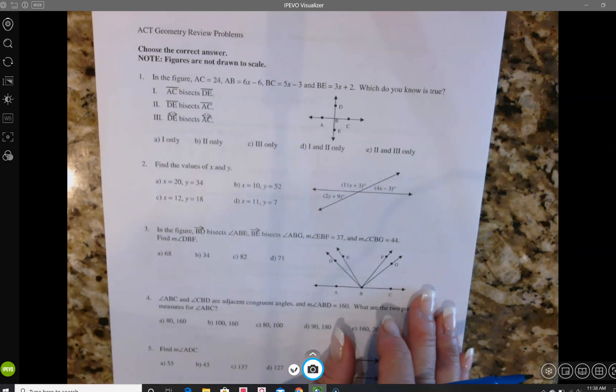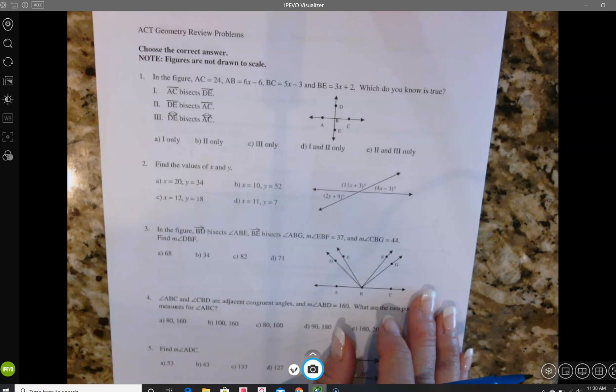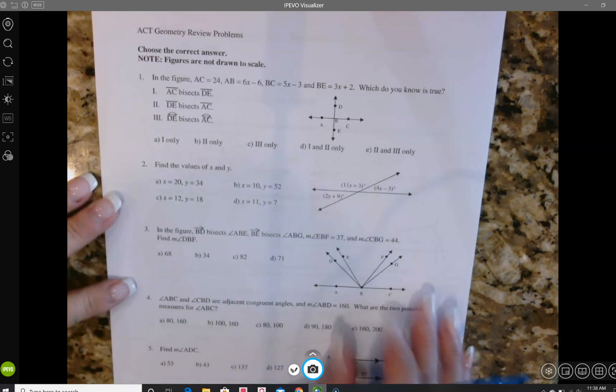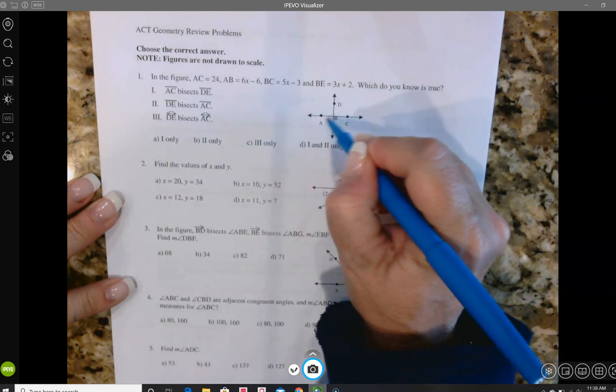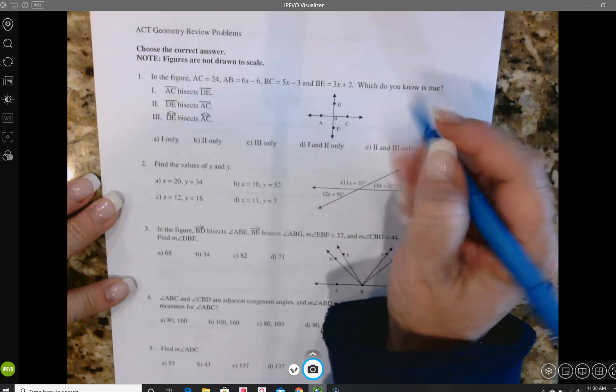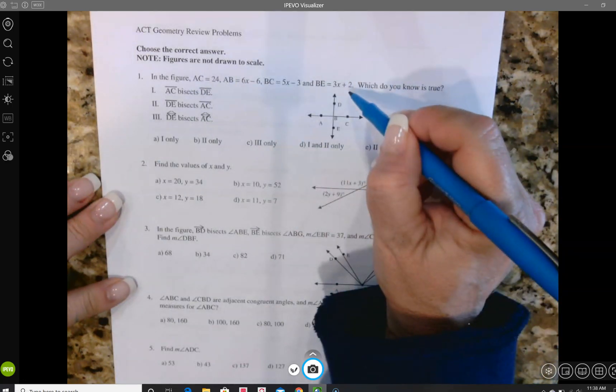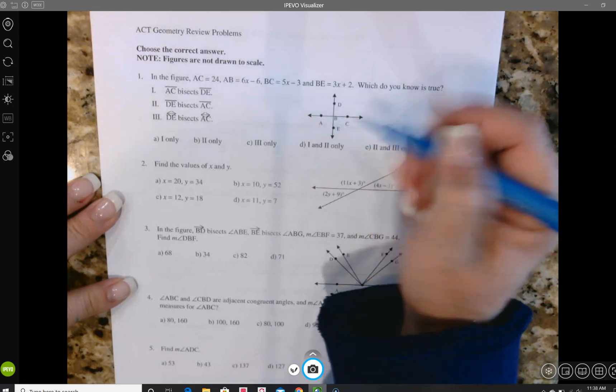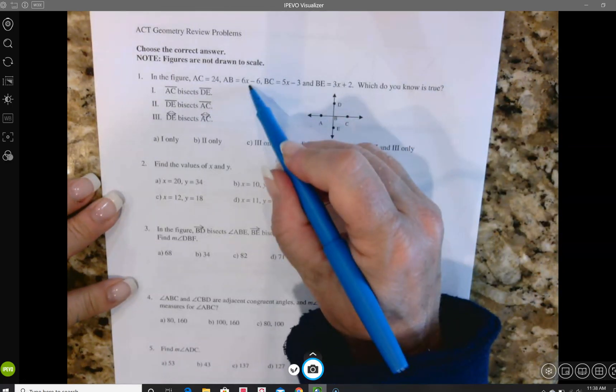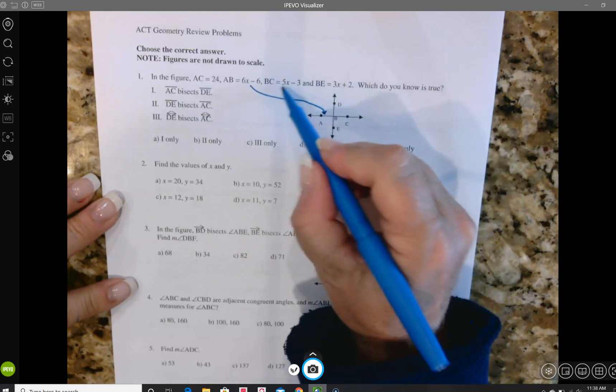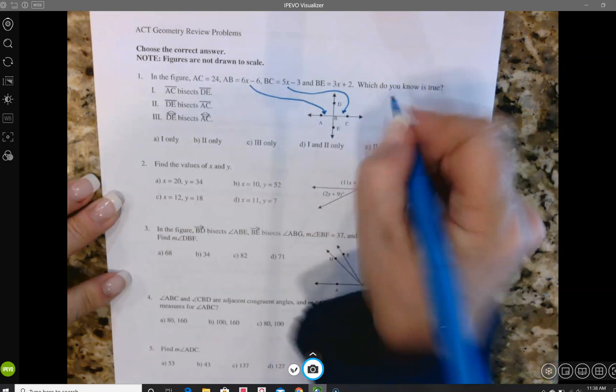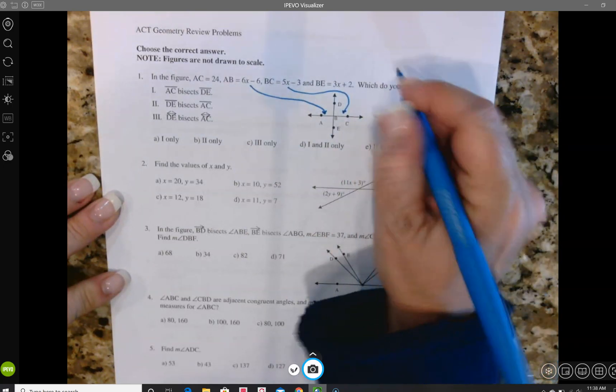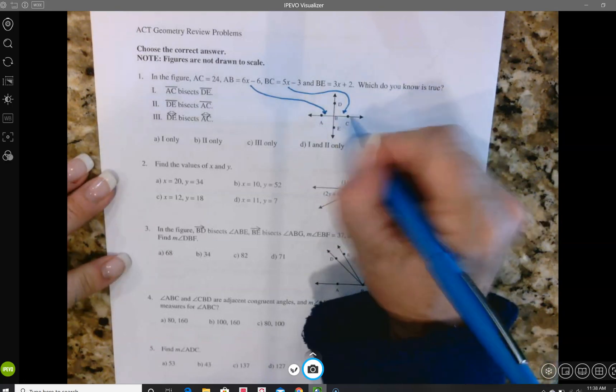So these will not be short videos. So number one, in the figure AC is equal to 24 and AB is 6x minus 6, BC is 5x minus 3, and BE is 3x plus 2. So we've got expressions for both sides. If we take AC, we know by the segment addition postulate that those two things together would add up to be the total and we know the total is 24.